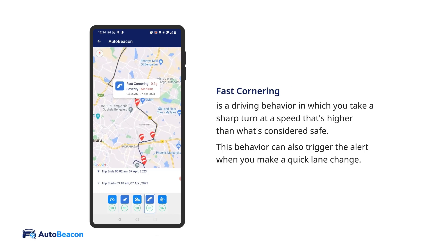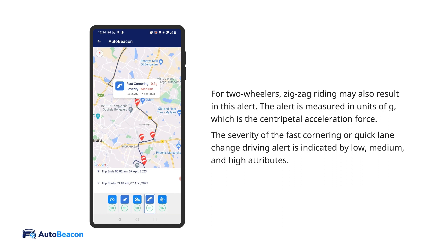Fast cornering is a driving behavior in which you take a sharp turn at a speed that's higher than what's considered safe. This behavior can also trigger the alert when you make a quick lane change. For two-wheelers, zig-zag riding may also result in this alert. The alert is measured in units of G, which is the centripetal acceleration force, and the severity is indicated by low, medium, and high attributes.